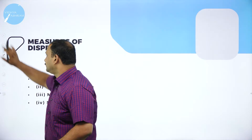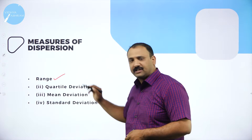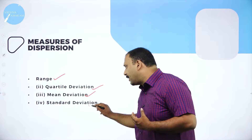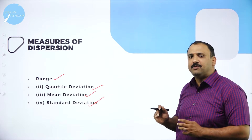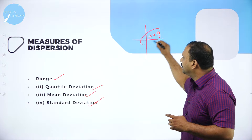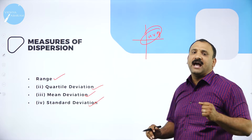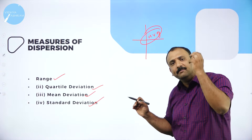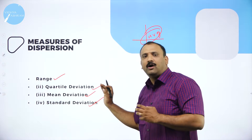Now, measures of dispersion: what are the factors through which we measure dispersion? We start with range, then quartile deviation, mean deviation, and standard deviation. The word deviation itself is very important — it means I am going to deviate from the average, and I'm going to understand how far the data is moving away from the average, seeing the value and the statistical application in economics.